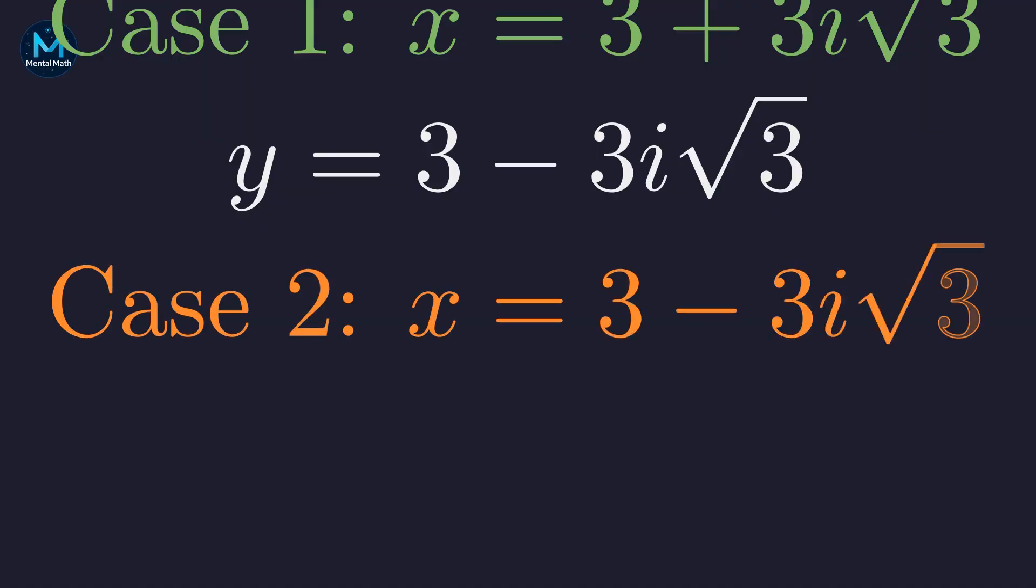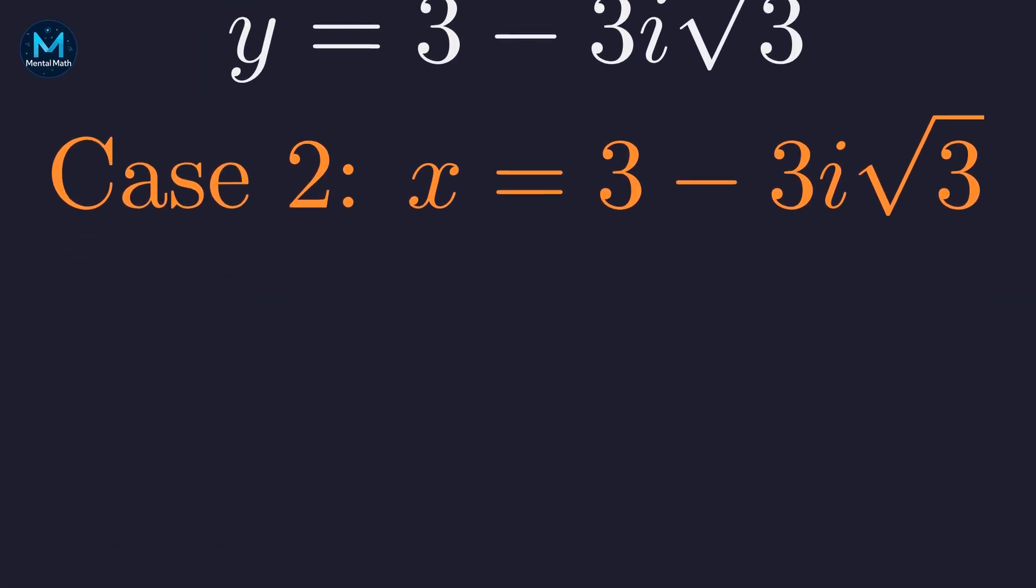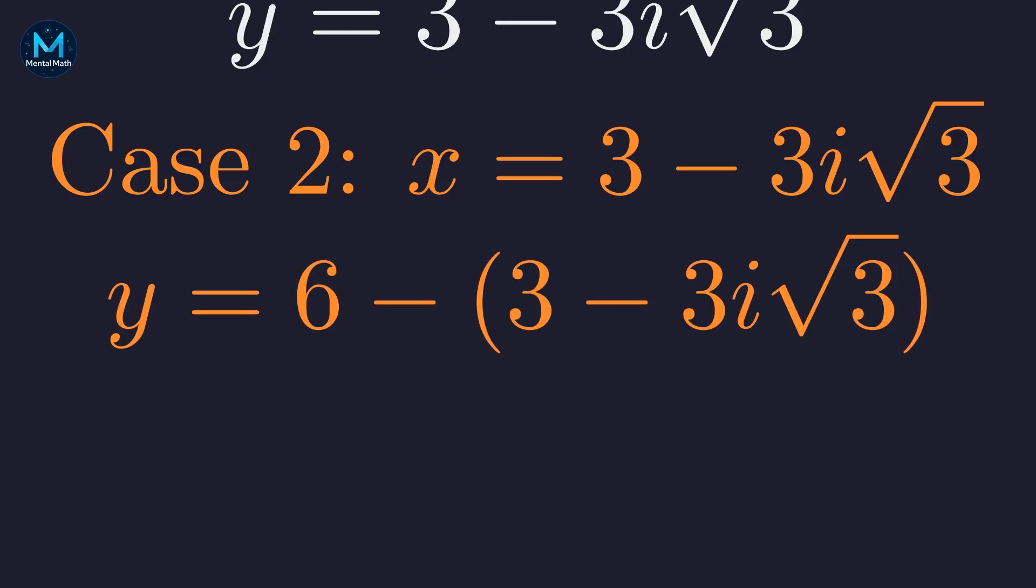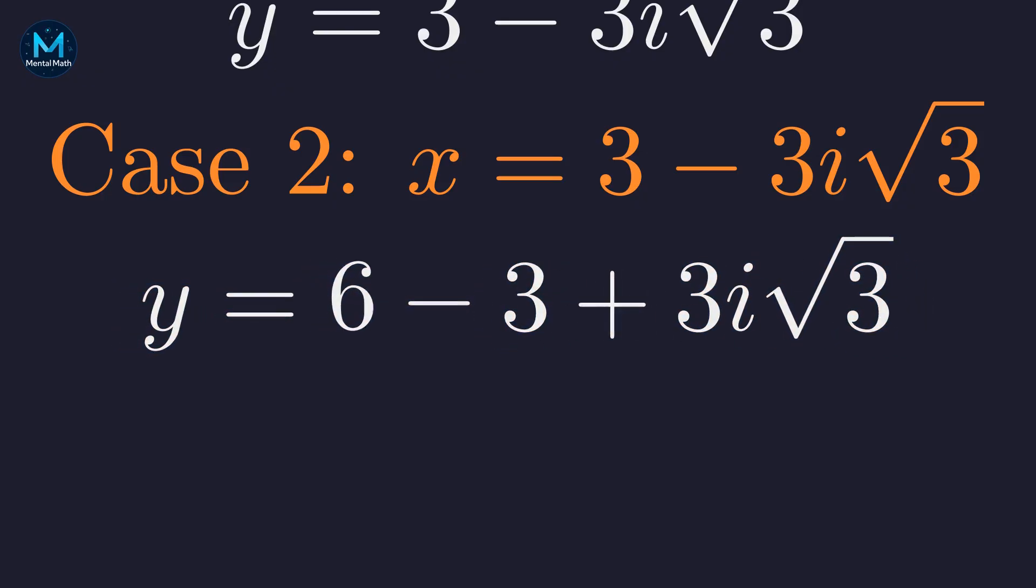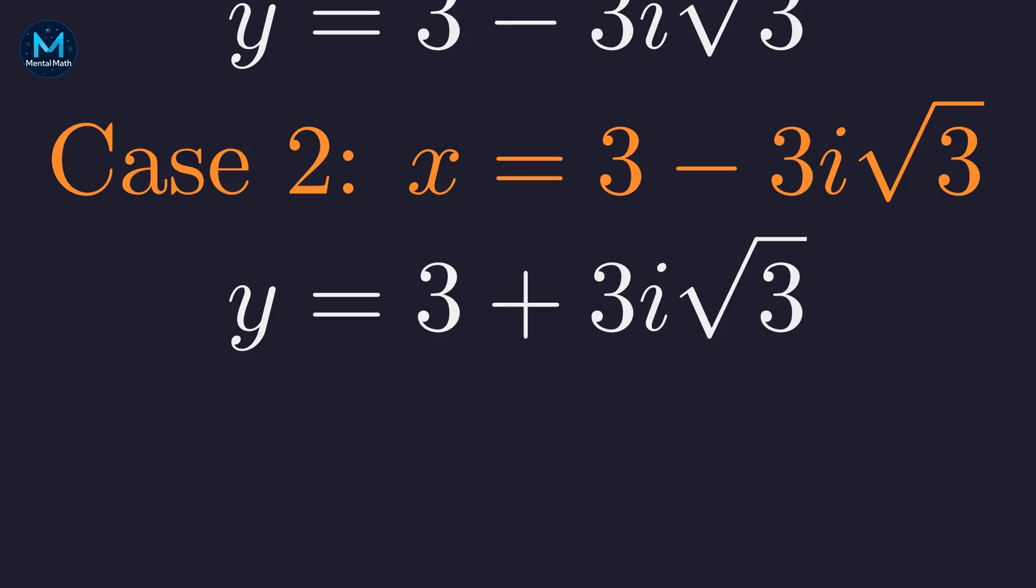For the second case where x is 3 minus 3i root 3, substituting into the equation for y, distributing the negative, gives us 3 plus 3i root 3. Interesting! Notice how the x and y values swap their imaginary parts.